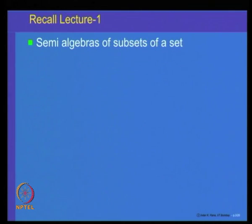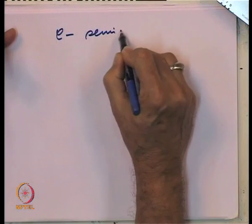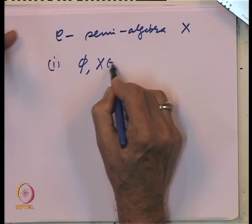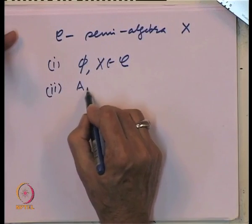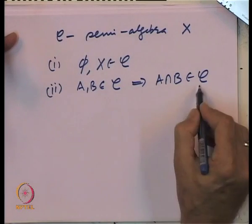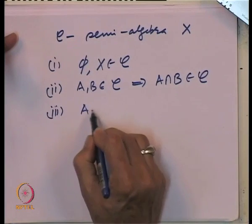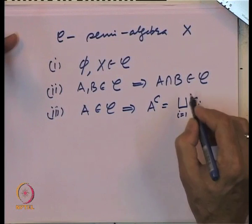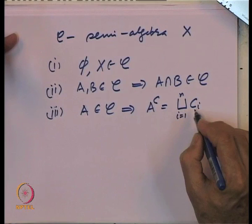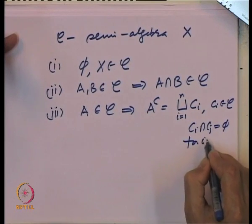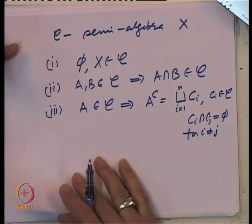Let us recall what we called the semi-algebra of subsets of a set X. A semi-algebra C is a collection of subsets of a set X with the following properties: the empty set and the whole space belong to it; for A and B belonging to C, the intersection A∩B also belongs to C, so C is closed under intersections; and if A belongs to C, then A complement can be represented as a finite disjoint union of elements of C, i.e., A complement equals the union of C_i's where each C_i belongs to C and C_i ∩ C_j is empty for i ≠ j.